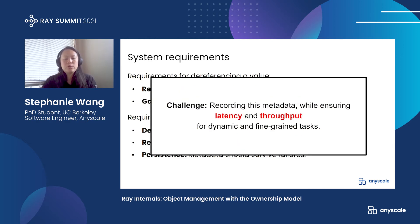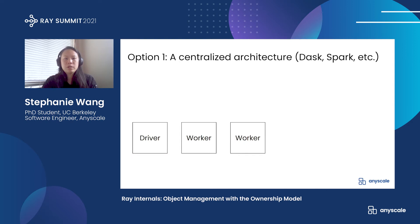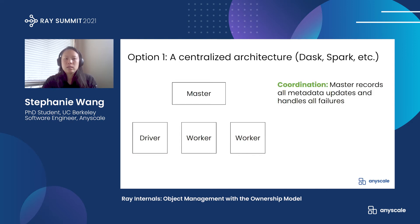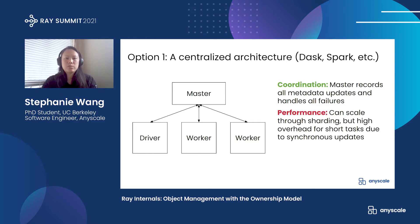Of course, the main challenge is doing all of this without sacrificing latency and throughput. One option is to use a centralized master, which is used by systems like Dask and Apache Spark. We can have one process manage all object refs. So to execute a task, the driver first sends it to the master, which then sends it to the right worker. And this makes things like failure handling really simple. But as we saw earlier, performance suffers because we have to send all tasks through the master.